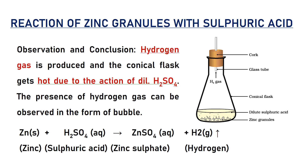Activity: reaction of zinc granules with sulfuric acid. Zinc is a metal; sulfuric acid is an acid. Observation and conclusion: hydrogen gas is produced and the conical flask gets hot due to the action of dilute sulfuric acid on zinc. The presence of hydrogen gas can be observed in the form of bubbles. Chemical reaction: Zn + H₂SO₄ → ZnSO₄ + H₂.